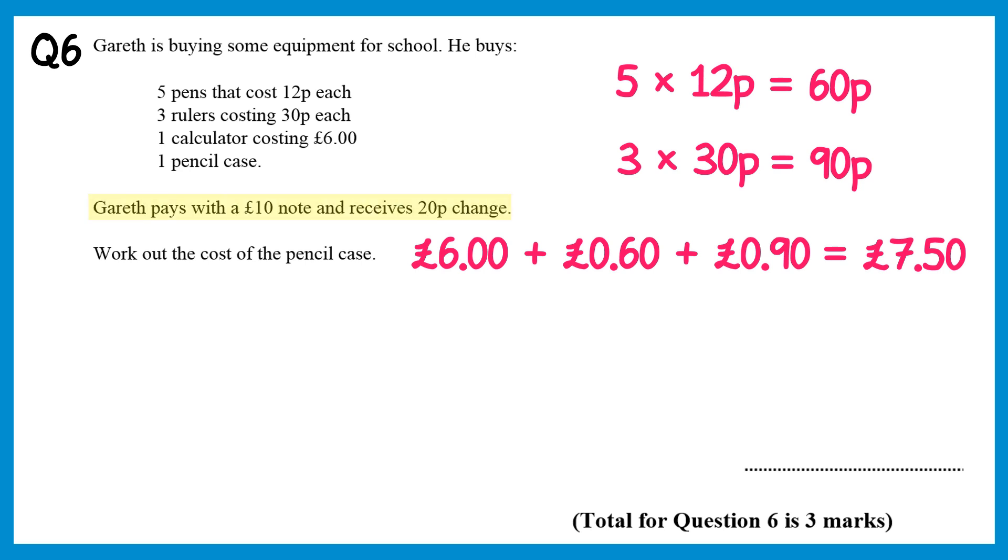We're told Gareth pays with a 10 pound note and receives 20p change, so if you do 10 pounds take away 20p, you'll get 9 pounds 80. This is how much he must have spent altogether. So if you do 9 pounds 80 take away 7 pounds 50, you'll get the cost of a pencil case, which is 2 pounds 30.